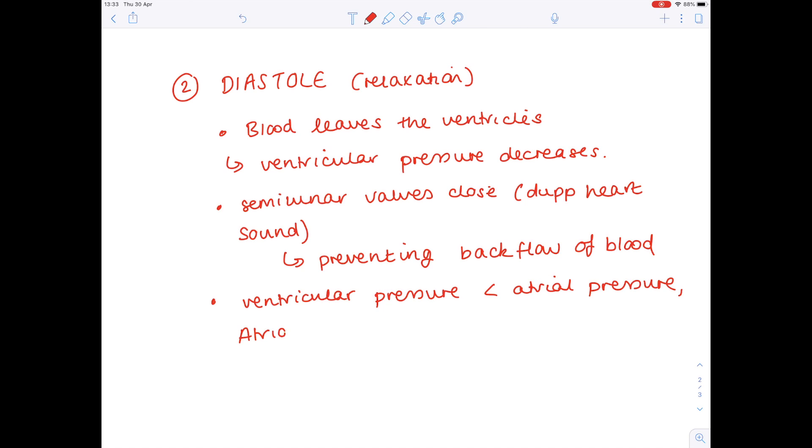So the atrioventricular valves open, meaning that blood flows from the atria to the ventricles. So we're setting ourselves up for the beginning part of the cardiac cycle. And then effectively the next cardiac cycle begins when the walls of the atria contract again.